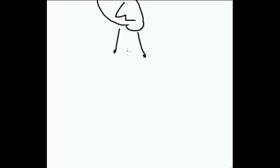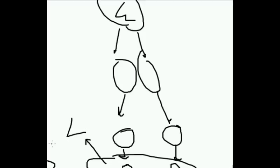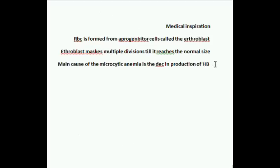In microcytic anemia, the erythroblast is divided into smaller cells, and those smaller cells divide into much smaller cells. The erythroblast recognizes the decreased hemoglobin production and subdivides further to keep hemoglobin concentration constant, resulting in cells less than 80 micrometer cubed. This is microcytic anemia, with a mean corpuscular volume less than 80 micrometers.